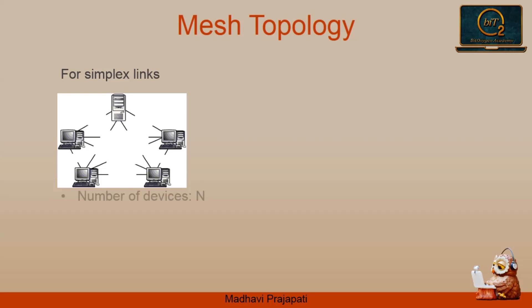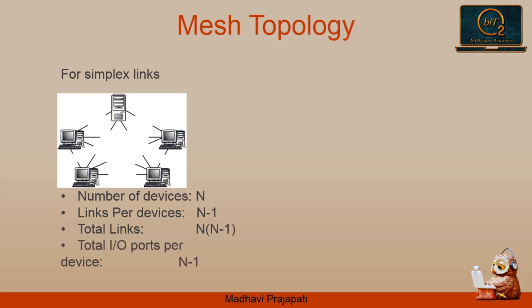Consider n devices where every device is connected to each other. The links per device is n-1. Node 1 must be connected to n-1 nodes, node 2 must be connected to n-1 nodes, and so on — node n must be connected to n-1 nodes. So we need n times (n-1) total physical links. Total I/O ports required per device is n-1.